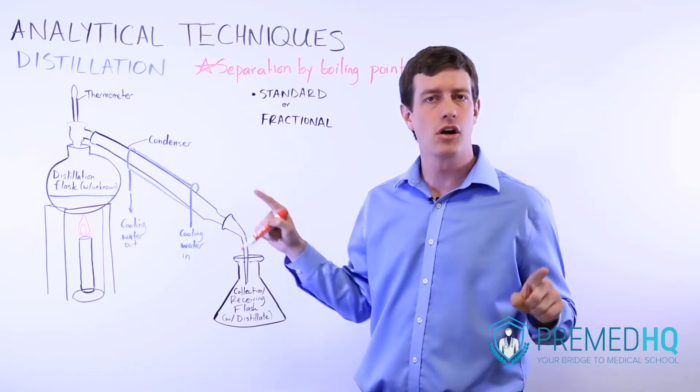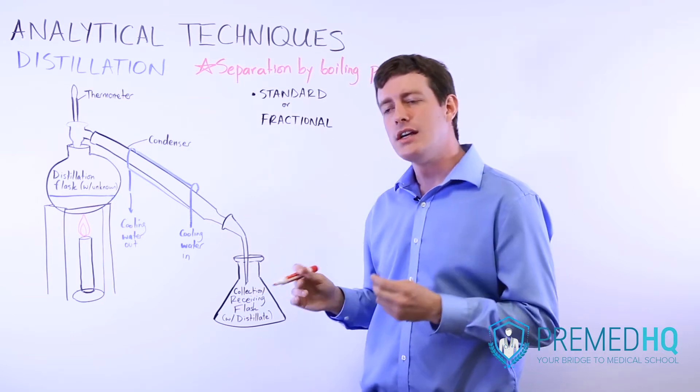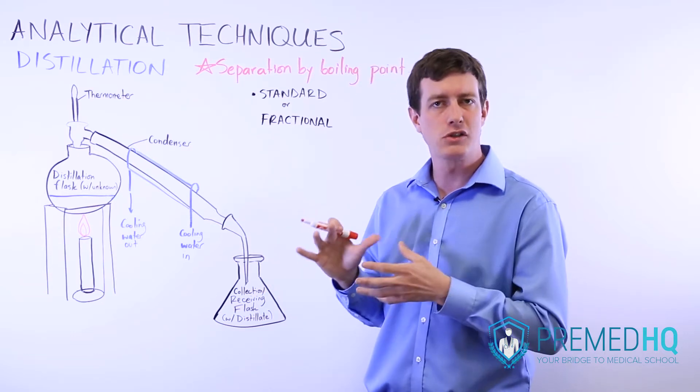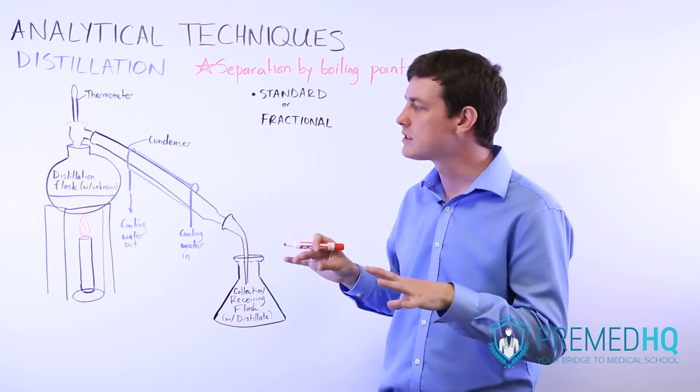With organic compounds you're looking at the length of the carbon chain because a larger carbon chain that isn't branched tends to have a lot of van der Waals interactions, so it's harder to break those intermolecular forces.